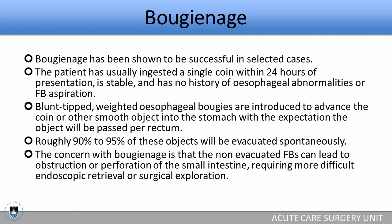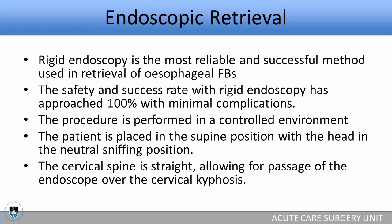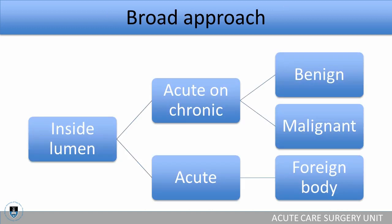Endoscopic retrieval, as I said, is the gold standard. Rigid endoscopy is the most reliable and successful method used in the retrieval of esophageal foreign bodies. The safety and success rate with rigid endoscopy has approached 100% with minimal complications. The procedure is performed in a controlled environment, with the patient in the supine position, head in the neutral sniffing position, and the cervical spine straight, allowing for passage of the endoscope over the cervical kyphosis. Very good results — definitely the gold standard.